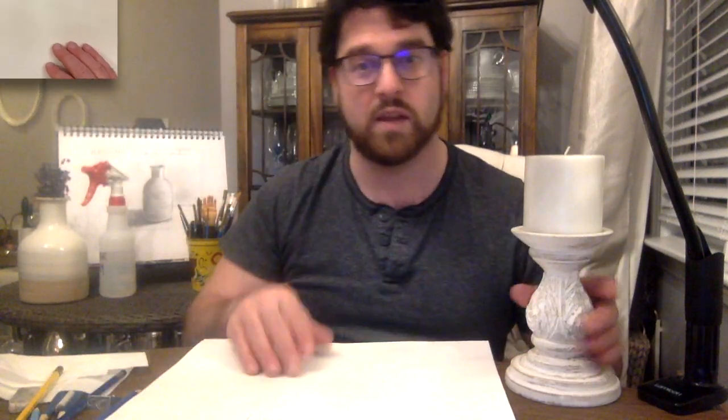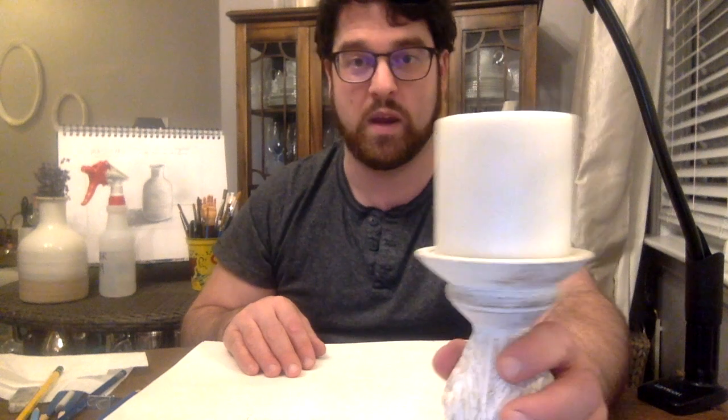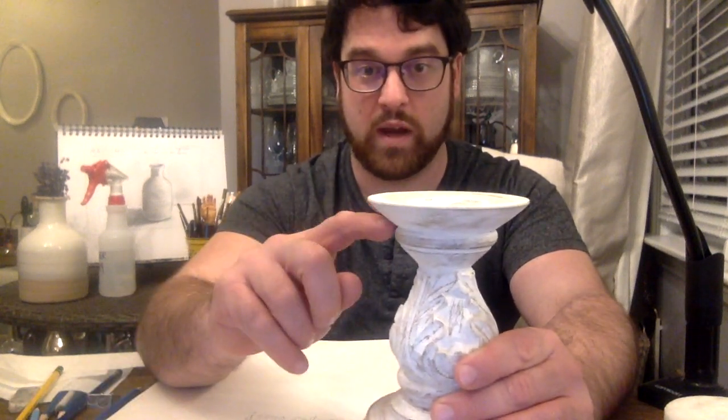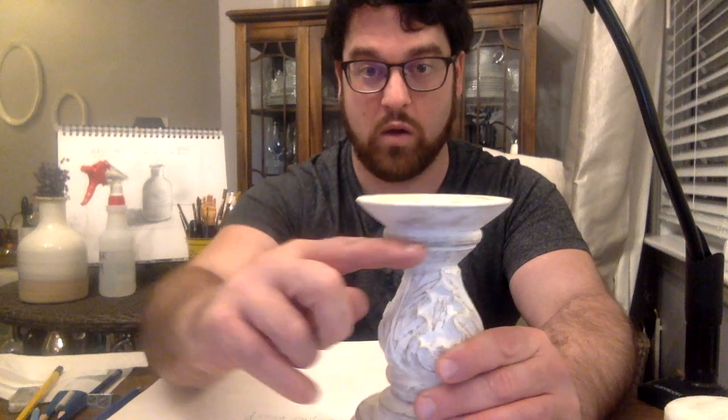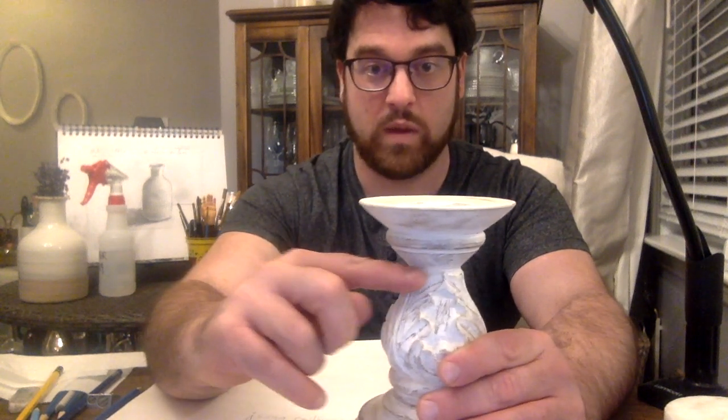So, looking at this candlestick here, we can see obviously it's made up of a cylinder for the candle. Here we have two sort of upside down cones, right? So it's a triangular shape, but it kind of gets cut off right here. There's a second one below it that gets cut off right there.